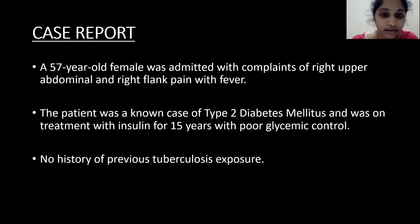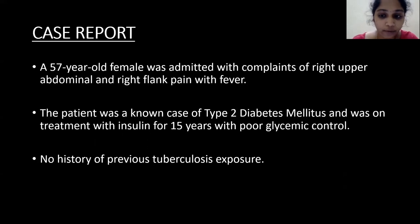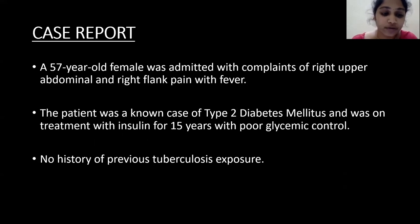Case Report. A 57-year-old female was admitted with complaints of right upper abdominal and right flank pain with fever. The patient was a known case of type 2 diabetes mellitus and was on treatment with insulin for 15 years with poor glycemic control. There was no history of previous tuberculosis exposure.